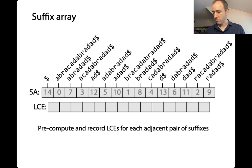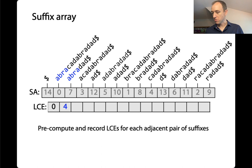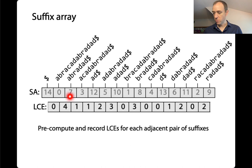The first pair of suffixes has no prefix in common, so the longest common prefix is length zero. The next two have a nice long one: one starts with ABRAC and the other with ABRAD, so ABRA is in common — I put four as the LCE. Continuing: zero, four, one, one, two, and so on, filling in the entire LCE array. The elements are staggered relative to their counterparts in the suffix array because we're combining adjacent pairs.